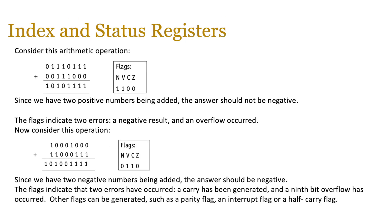Let's look at a particular arithmetic operation — two binary numbers being added. The flags are currently N, V, C, Z set as 1, 1, 0, 0. Since we have two positive numbers being added, the answer should not be negative. However, working this out, we end up with a 1 in the first column, indicating a negative value — the flag indicates two errors: a negative result and an overflow. In another example, adding 10000100 and 11000111 results in flags N, V, C, Z as 0, 1, 1, 0 — V indicates overflow and C indicates a carry, resulting in a nine-bit overflow. Other flags such as parity, interrupt, or half carry flags help detect errors in arithmetic calculations.